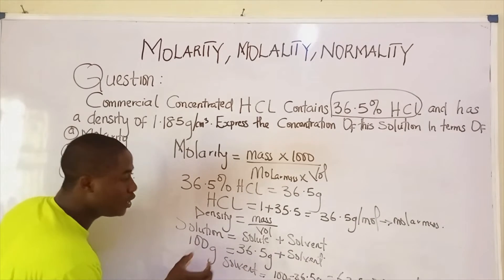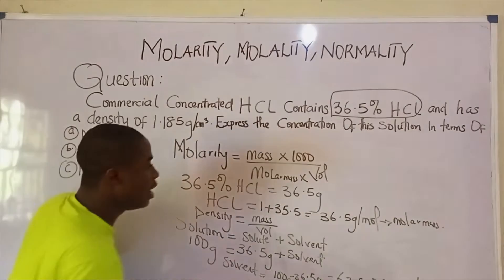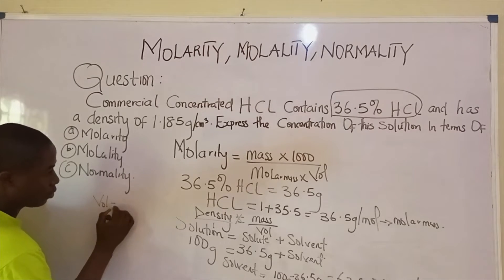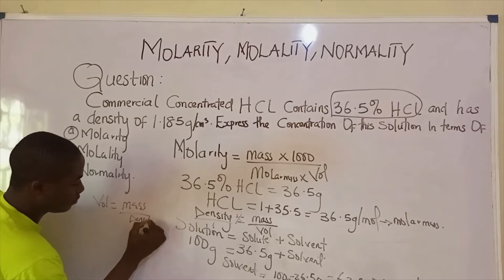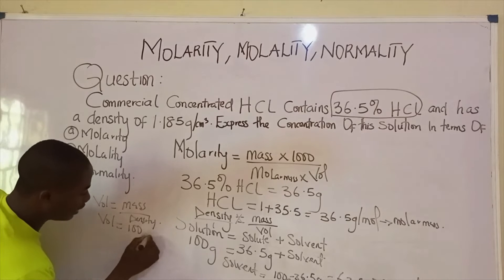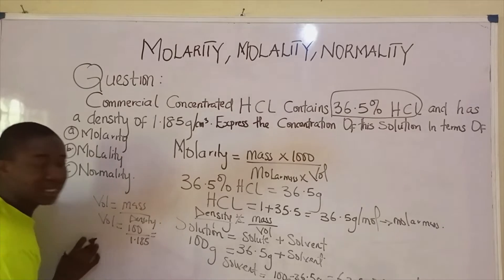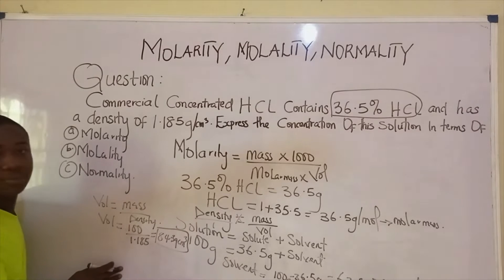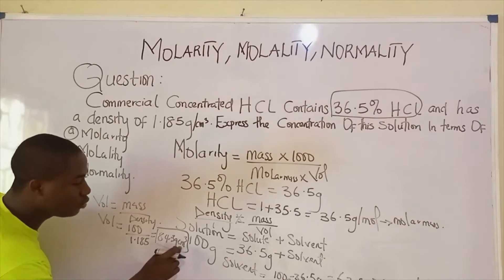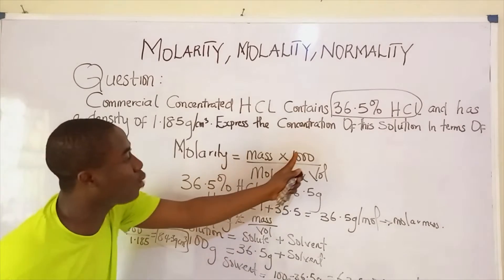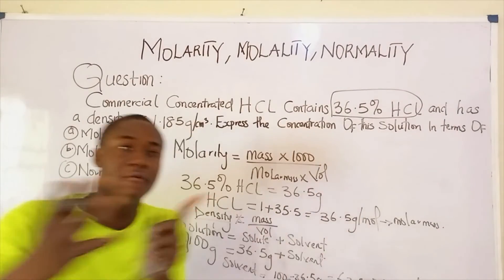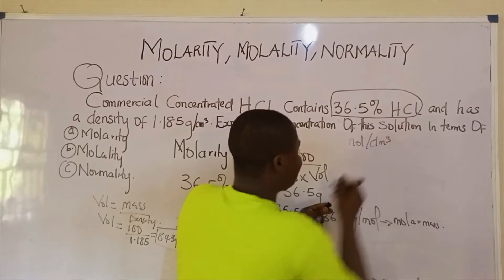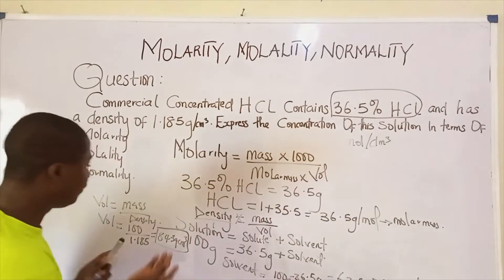To get the volume, we take the total mass of the solution, assumed to be 100 grams, and rearrange density = mass/volume to give: volume = mass/density = 100/1.185 = 84.39 cm³. Since molarity is measured in moles per dm³, the factor of 1000 in the formula converts cm³ to dm³, so we use 84.39 in the formula as-is.